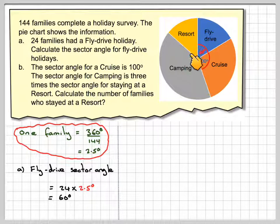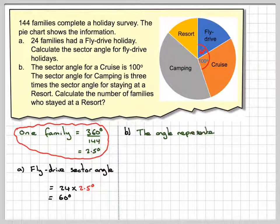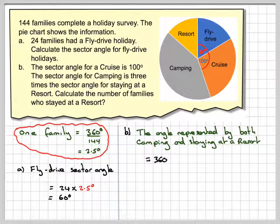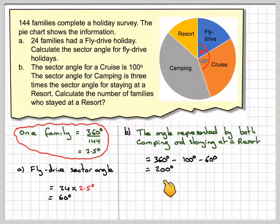We need to find the remaining angles left out of 360. These two angles are going to be in the ratio of 3 to 1. The angle represented by both camping and staying at the resort is 360 minus 100 minus 60, which is 200 degrees.